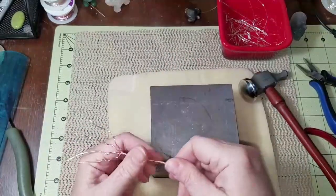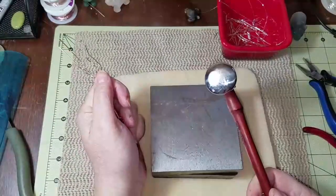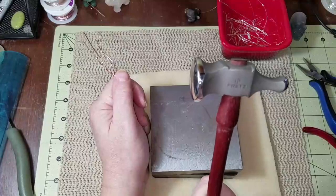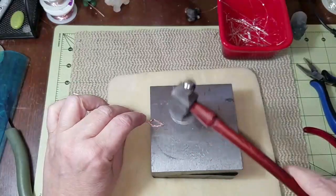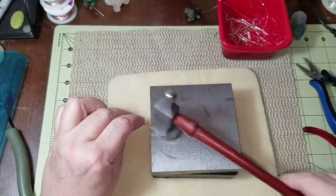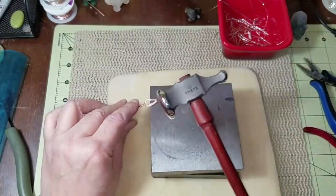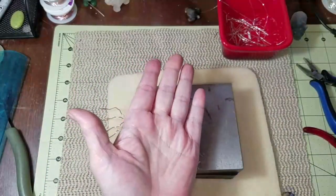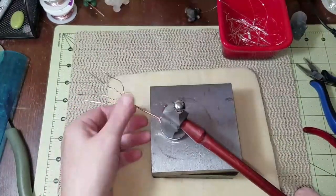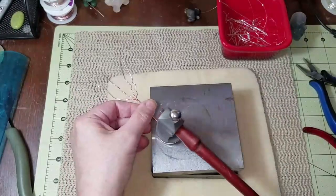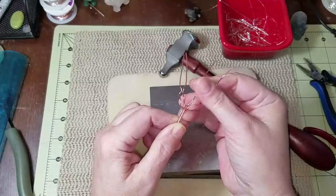Bench block and our hammer. This is a fretz, it's got a dome on it, it's not flat. So I'm just going to lay this here, gently tap it, and I'm going to stretch it out. What I'm doing is I'm coming down and pulling at the same time, but I'm letting the weight of the hammer come down and pull. Flip it over.